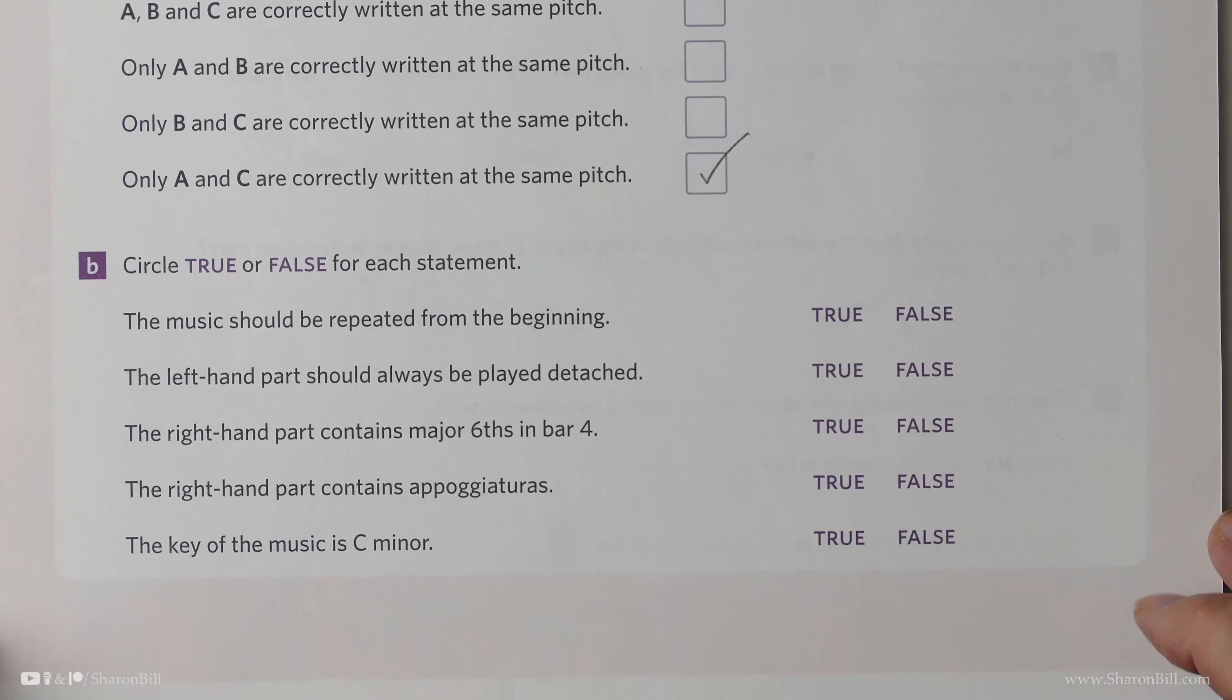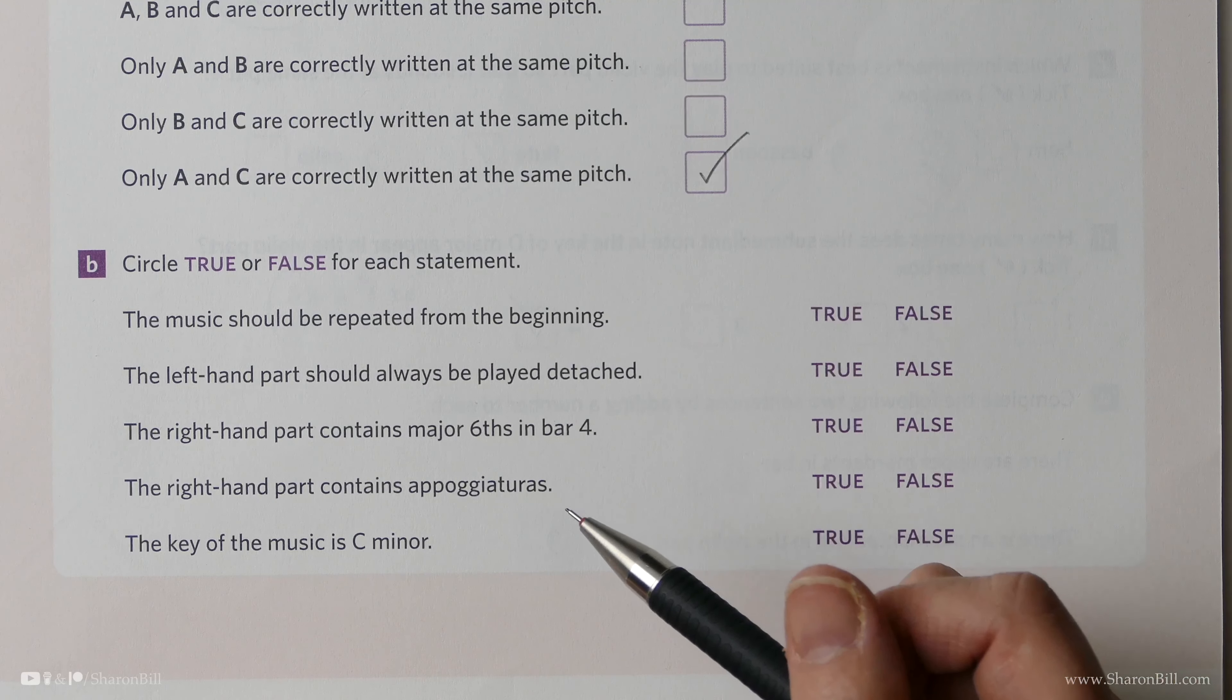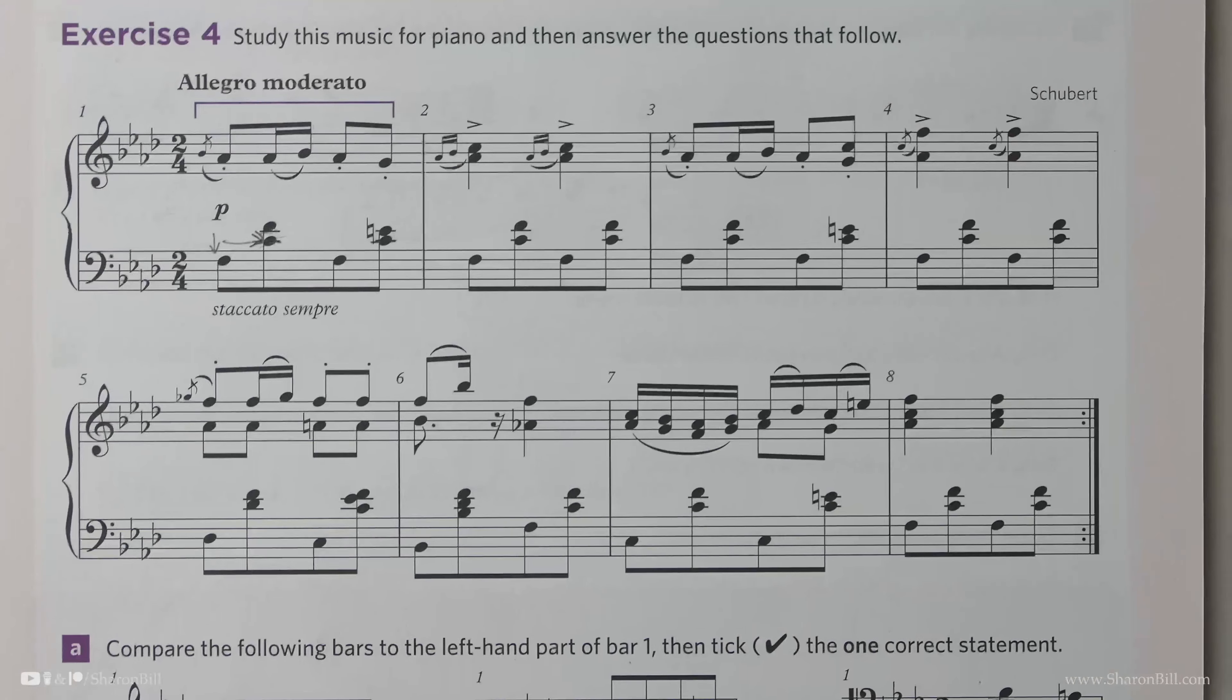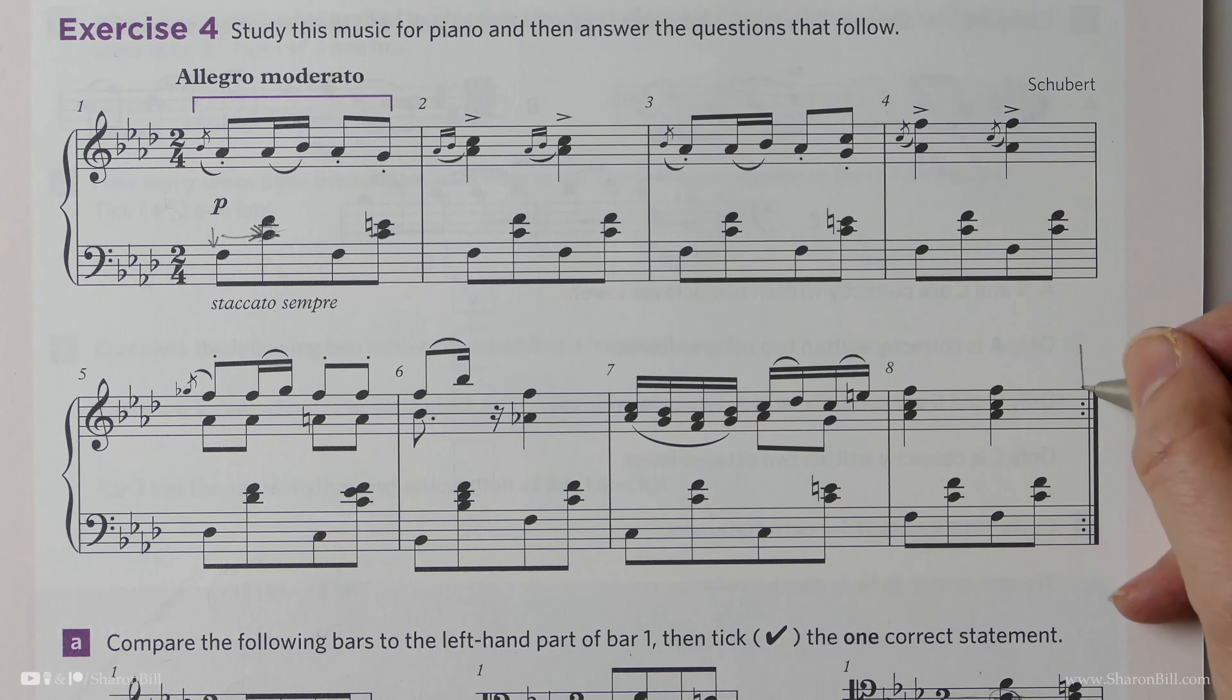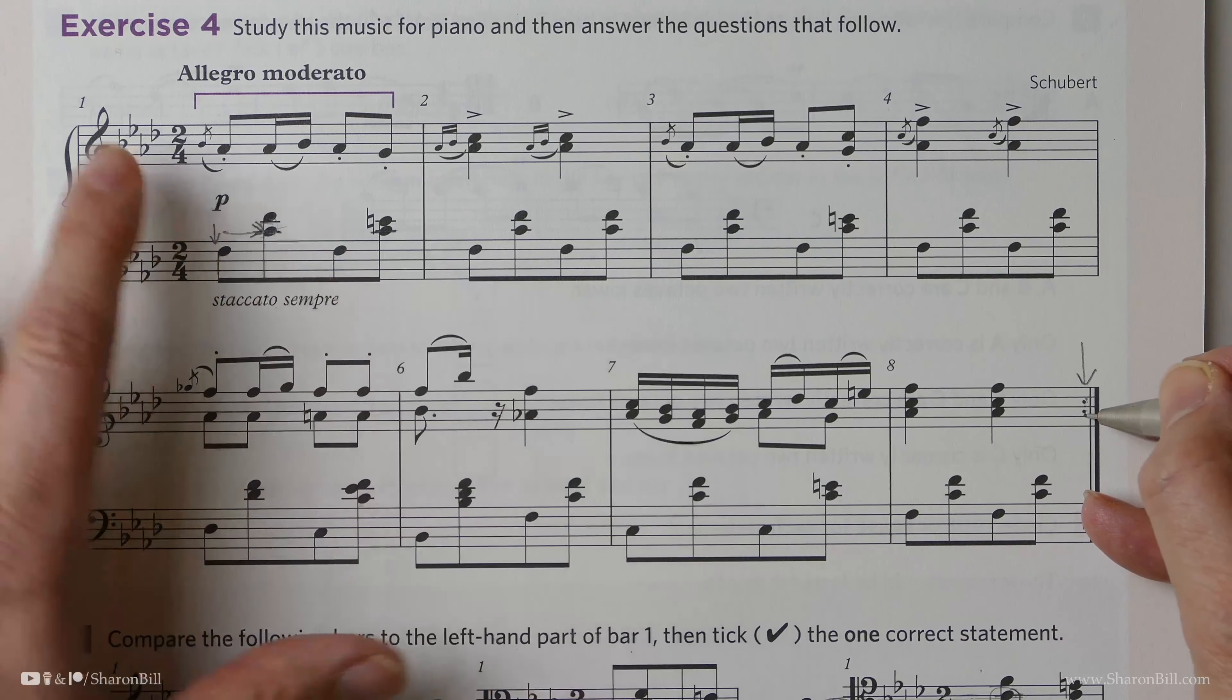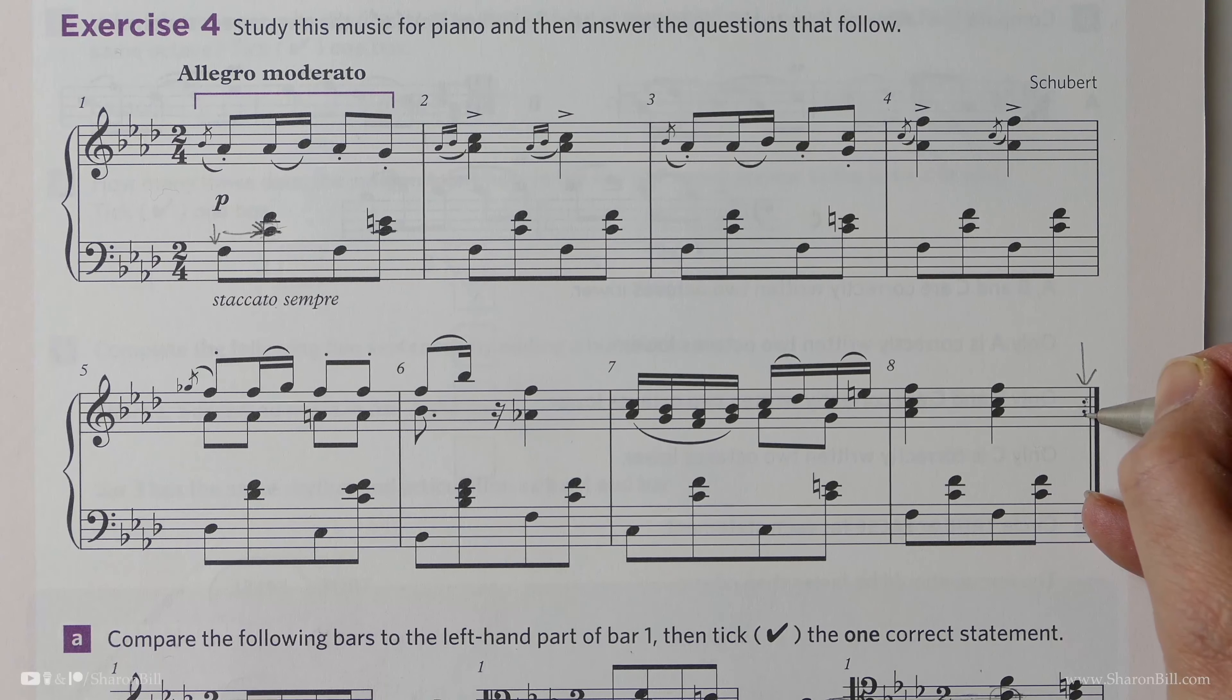Now we need to consider if these statements are true or false. Is it true that the music should be repeated from the beginning? Although there's no marks at the beginning, here we have the repeat mark. These dots tell us to bounce back to the beginning. That is true.